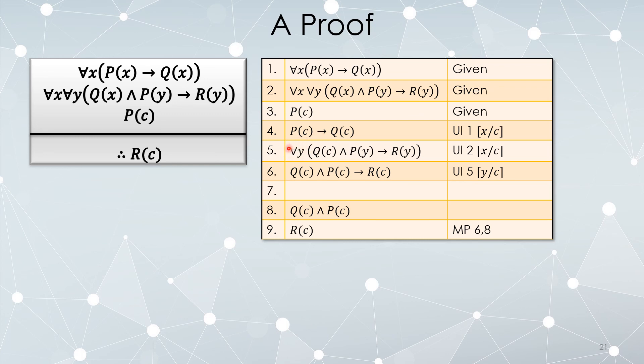And now notice that between lines 3 and 4, we can just apply modus ponens to get out Q(c). We already had P(c) as a given.